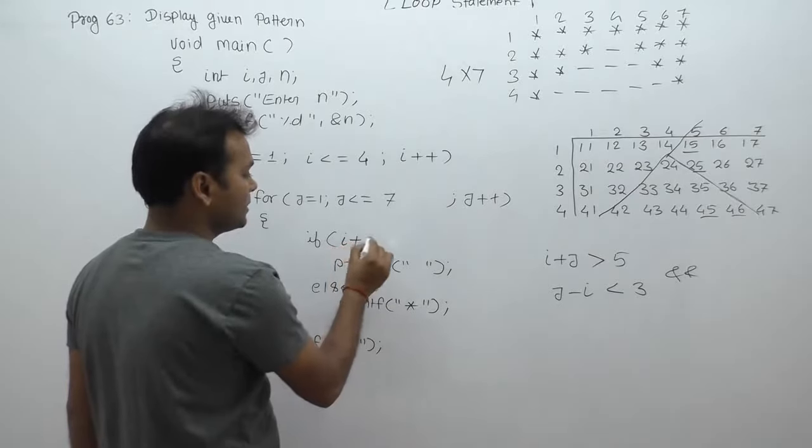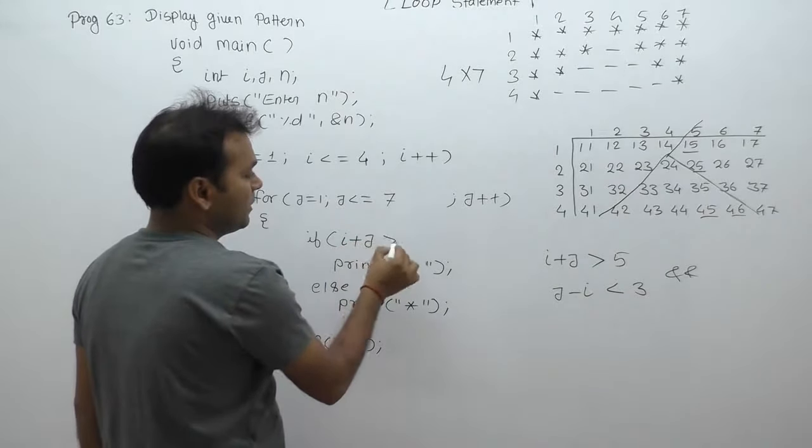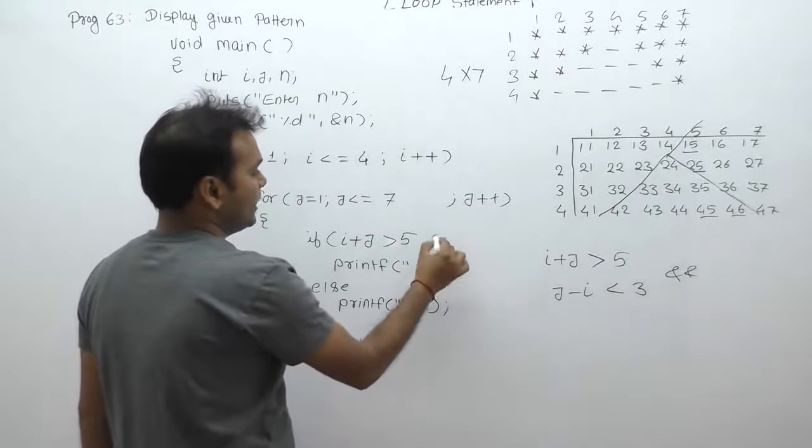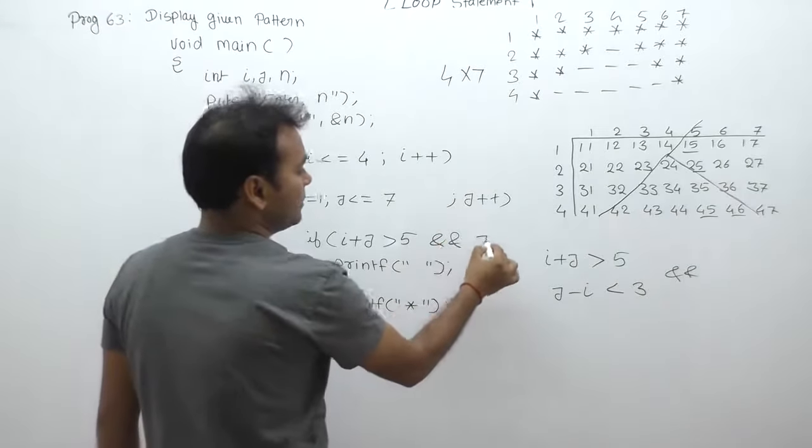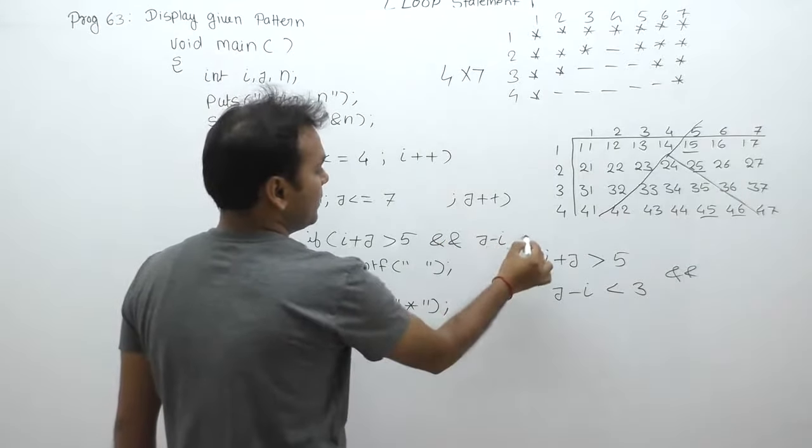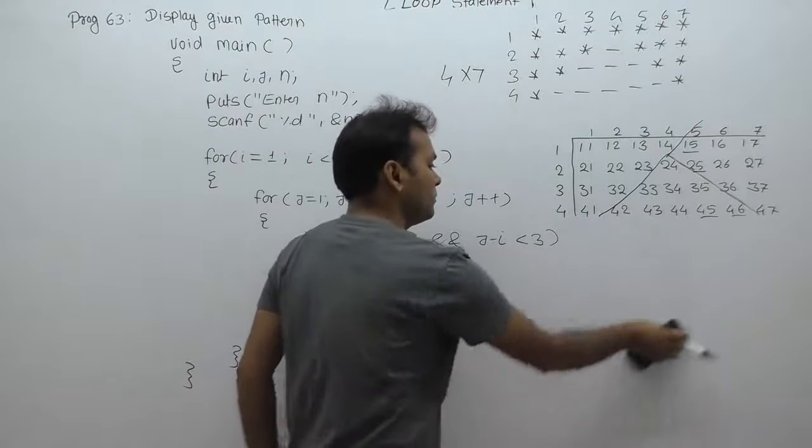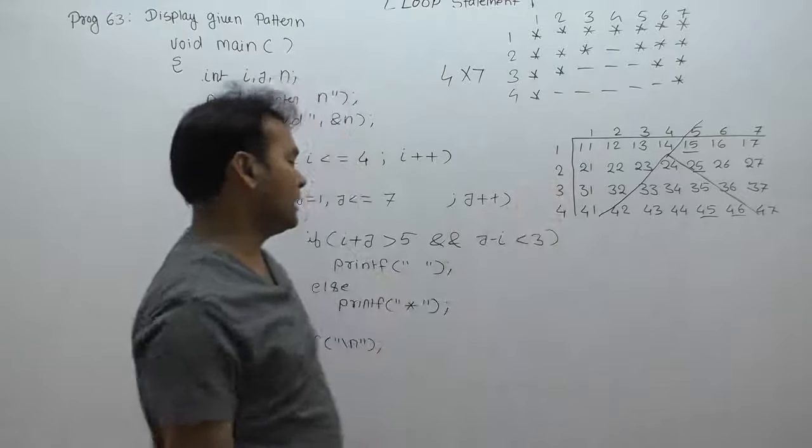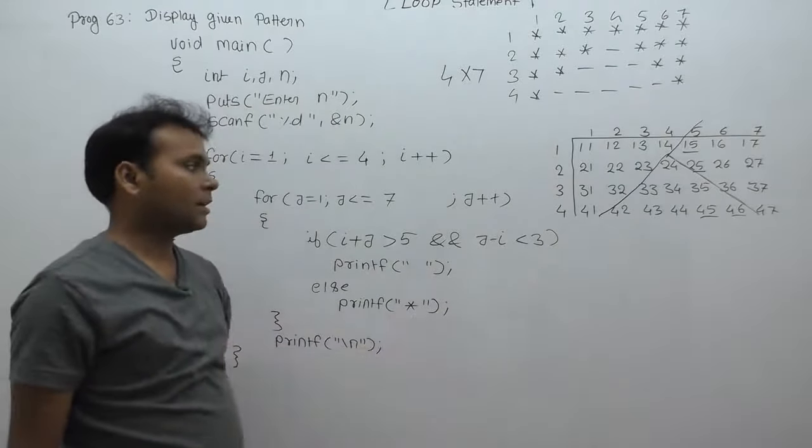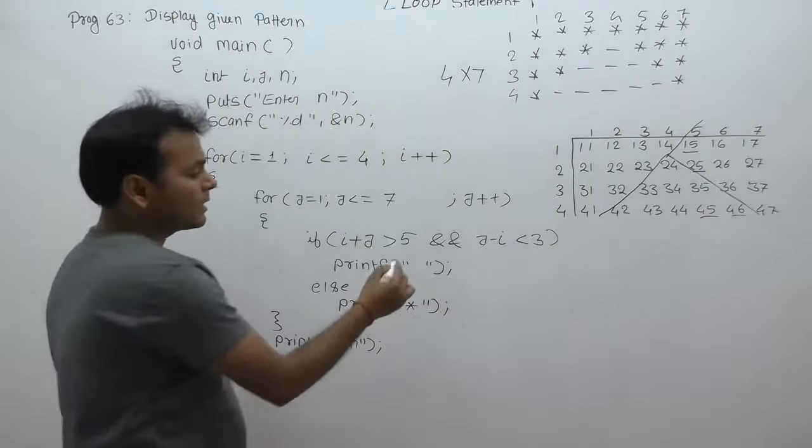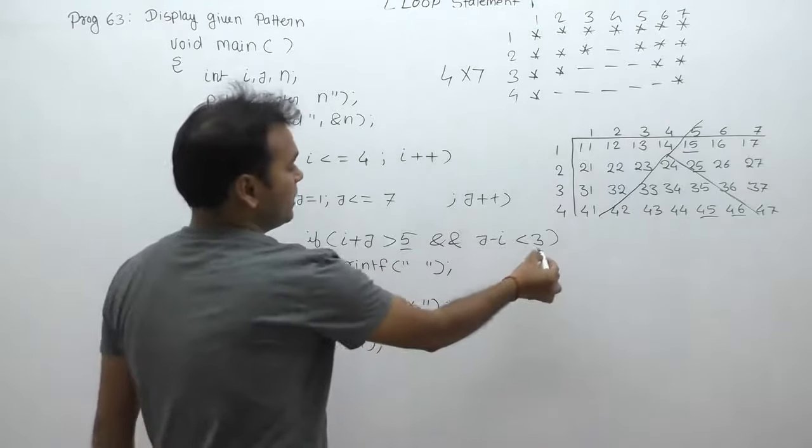Condition: i plus j greater than 5 AND j minus i less than 3. These particular conditions are only for space; remaining cases are stars. The constant values are 5 and 3.